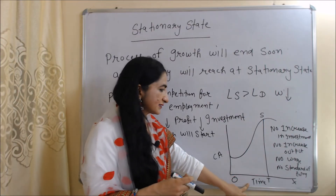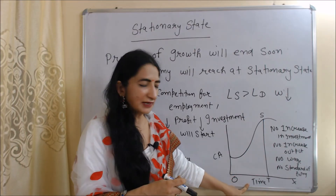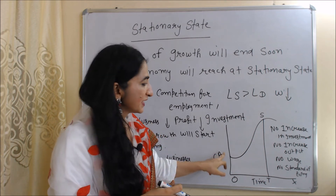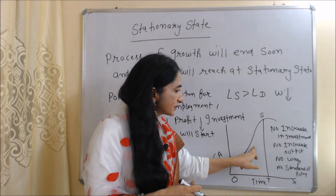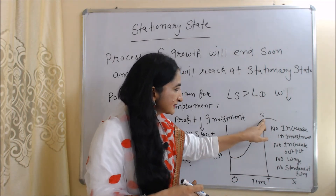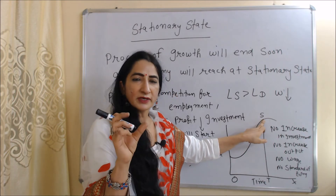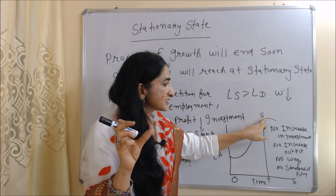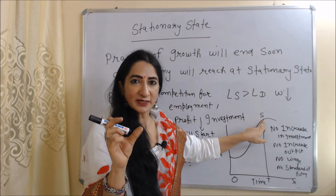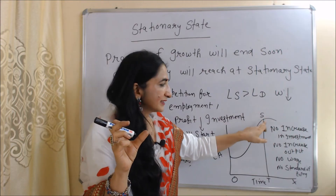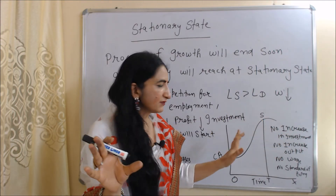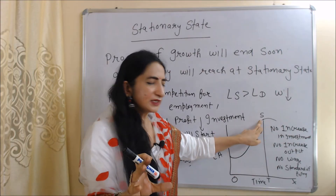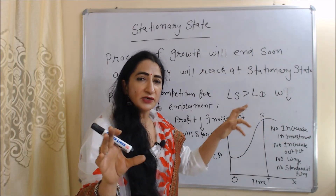In this diagram, the x-axis shows the time period and the y-axis shows capital accumulation. Initially the economy is growing, but at point S, economic growth reaches its maximum — this is called the stationary state point. At this point, there is no increase in investment, no increase in output, no increase in wages, and no increase in standard of living.